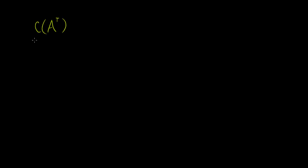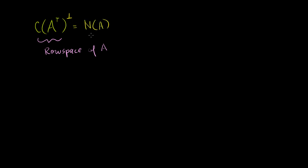I've got some matrix A. We learned several videos ago that its row space is the same thing as the column space of its transpose. So that right there is the row space of A. Its orthogonal complement — the set of all vectors that are orthogonal to this — is equal to the null space of A.